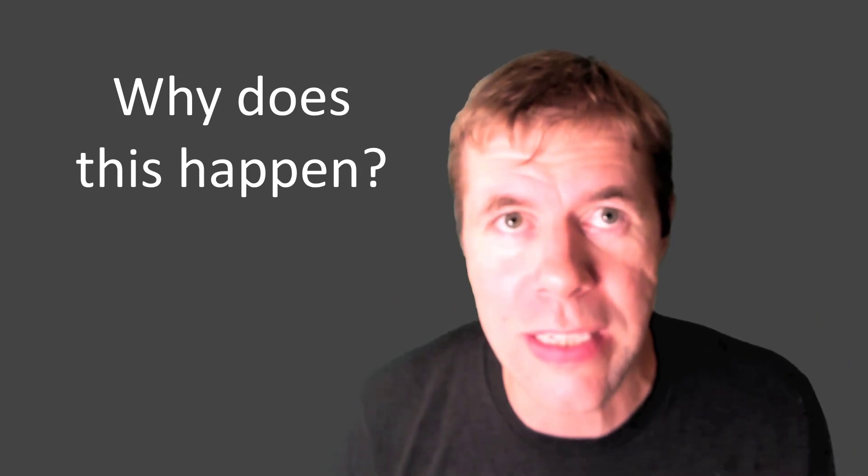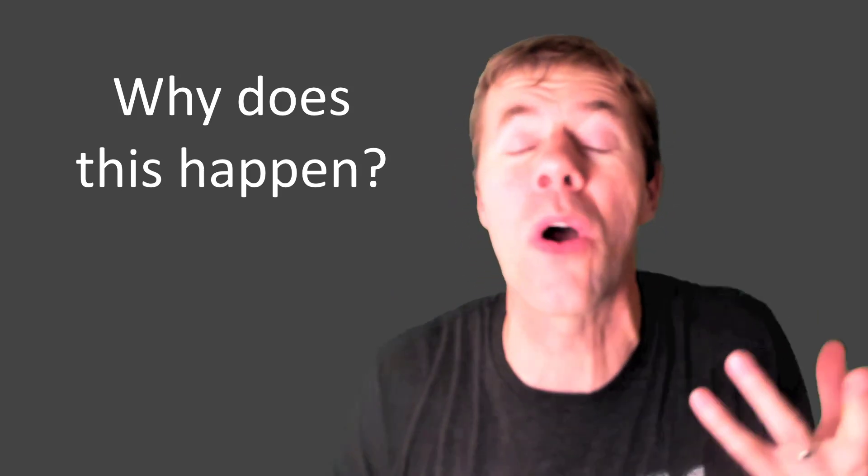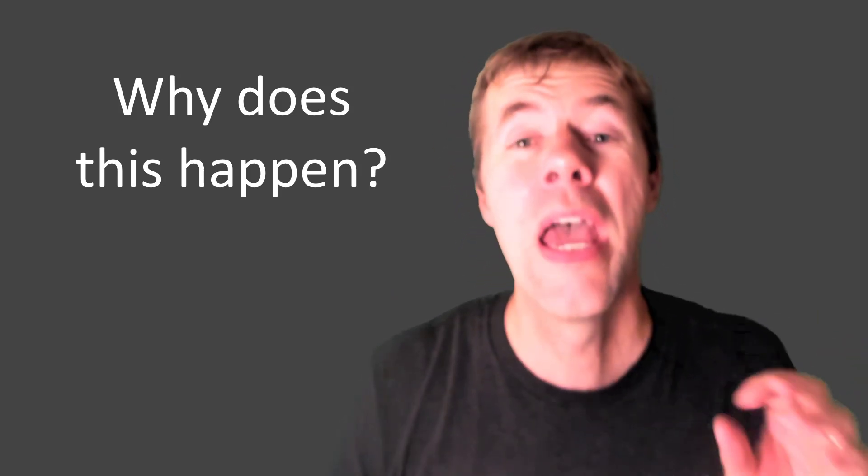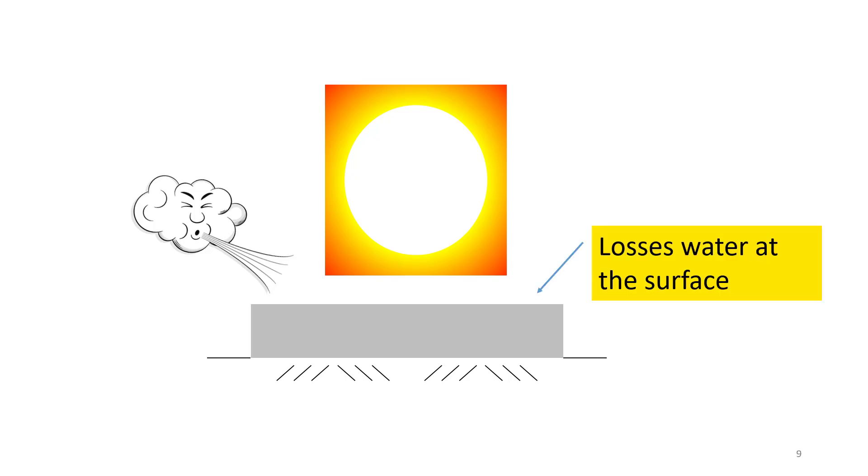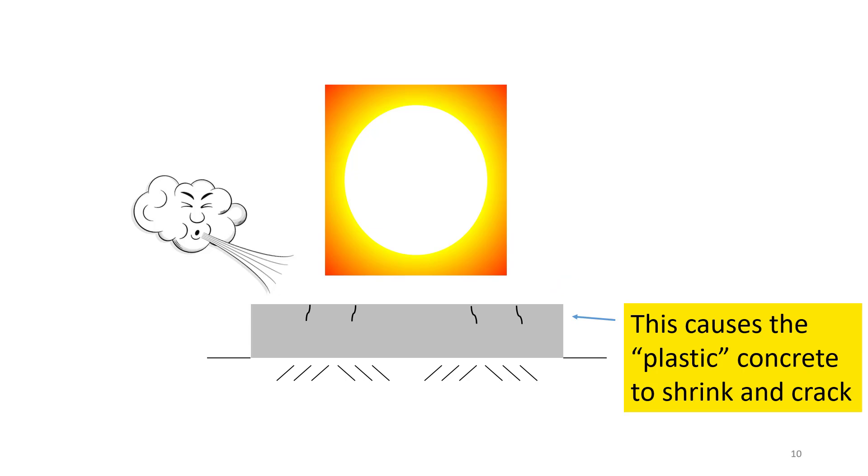Why in the world does this happen? Well, this is called plastic shrinkage cracking and this occurs when my fresh concrete, fresh wet not hard concrete, starts to dry out and bake in the sun or the wind starts to blow on it, or really any other time that you evaporate a lot of water from the surface of this fresh concrete. The concrete will shrink while it's still wet and it will cause plastic shrinkage cracking. These cracks in the plastic concrete...